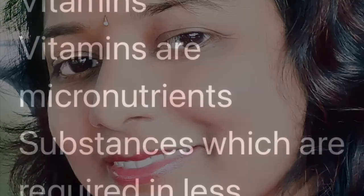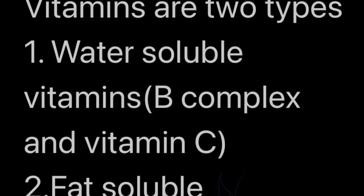Today I am going to teach you about vitamins. Vitamins are micronutrients — substances which are required in little quantities. Vitamins are of two types: water-soluble vitamins and fat-soluble vitamins. Water-soluble vitamins are B complex and vitamin C, and fat-soluble vitamins are A, D, E, and K.